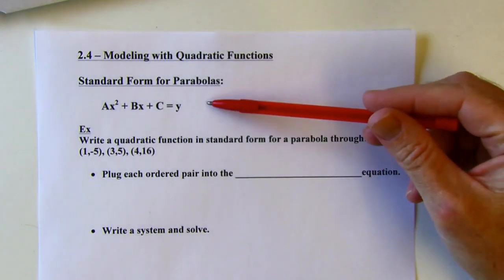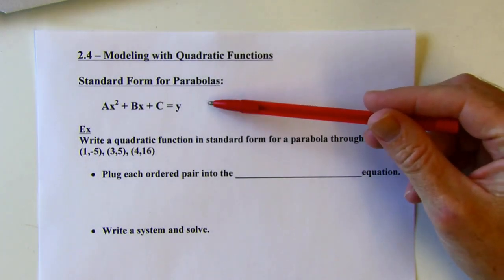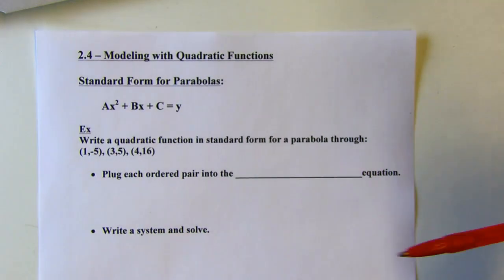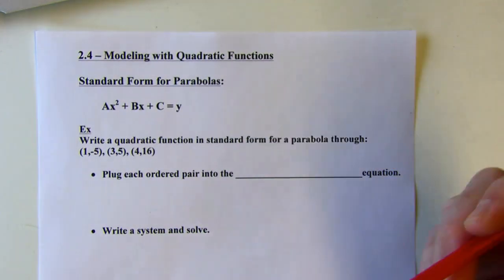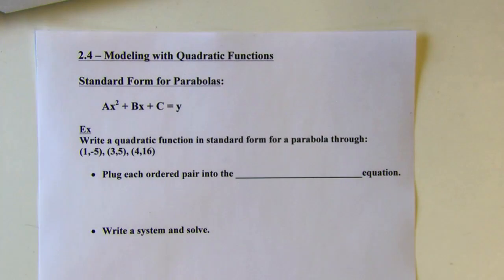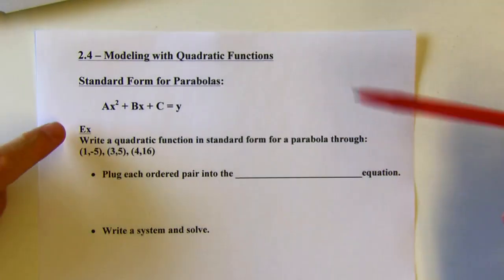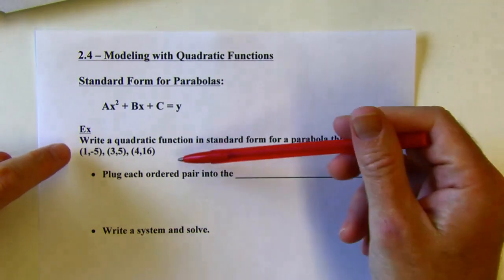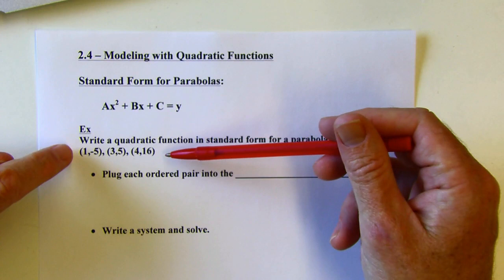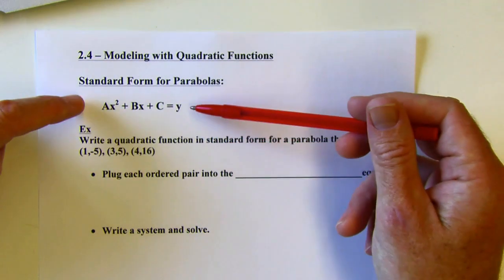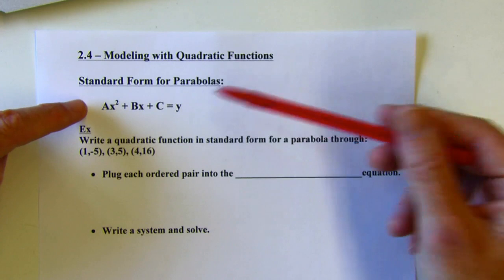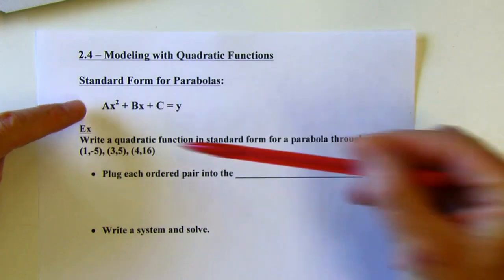Here is our standard form equation for parabolas. When I showed it before, I had the y equals on the left side of the equation, but this is just flipped around, and I've got a reason for that I'll get to later. What I want to do is write a quadratic function in standard form for a parabola through these three points. I need to figure out what a, b, and c are — they're just numbers — and my final answer will look something like that.